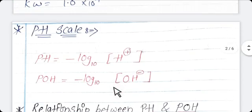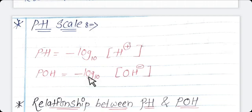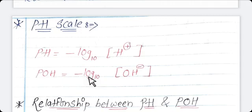Similarly, we can write the formula for pOH as the negative logarithm to the base 10 of the concentration of OH⁻ ion: pOH = −log₁₀[OH⁻]. pOH of a solution is defined as the negative logarithm to the base 10 of the molar concentration of OH⁻ ion in solution. These are the definitions of pH and pOH.